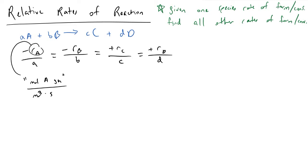So given RA, what is RC? To work through this generically, and then I'll provide an actual example with numbers, what we can say is that we know that minus RA over A must be equivalent to plus RC over C. If we multiply both sides of the equation, we'll find that RC is really equal to minus C over A, the stoichiometric coefficients of species A and C, times RA.